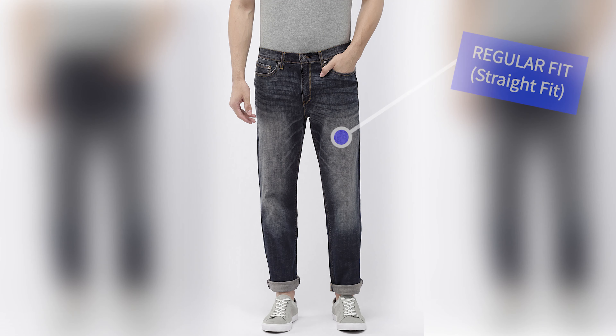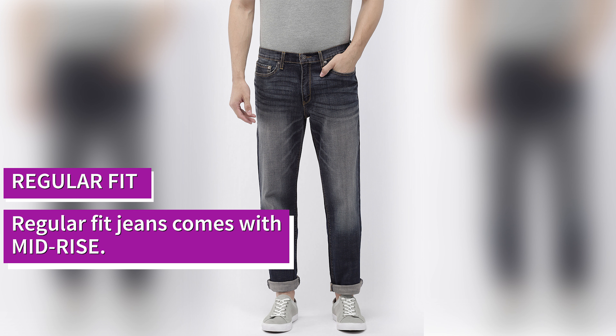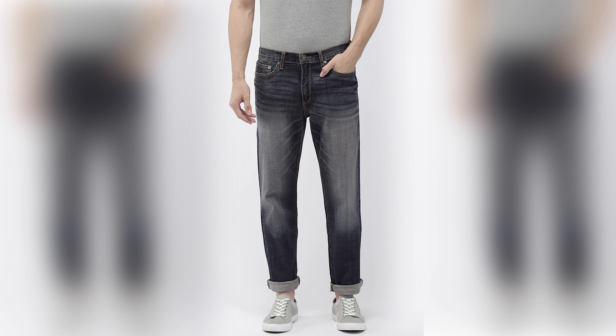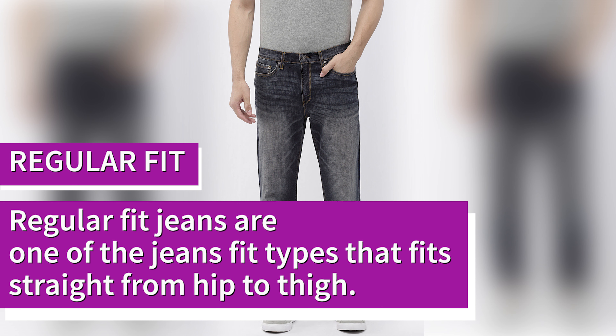Now let's talk about fit number three — regular fit, also known as straight fit. This is mid-rise and basically runs quite straight from the waist band all the way down. The leg opening is quite wide compared to slim fit and skinny fit.